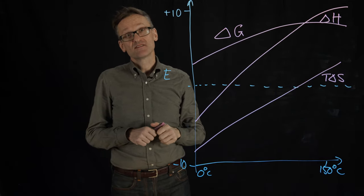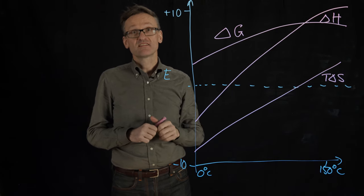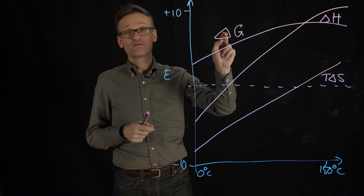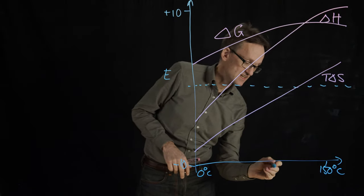Well remember that comes out straight from this definition that we had before, that the entropy S was minus the derivative of G with respect to temperature, right? And that's what we had on the x-axis.